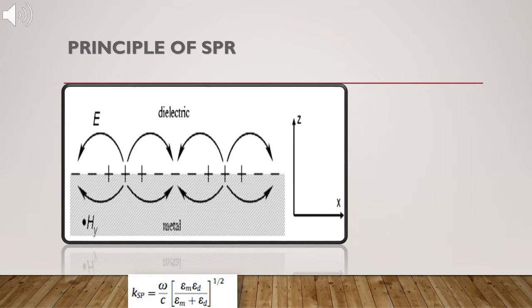The real part corresponds to the effective refractive index of surface plasmons and the imaginary part corresponds to the attenuation of surface plasmons in the direction of propagation.